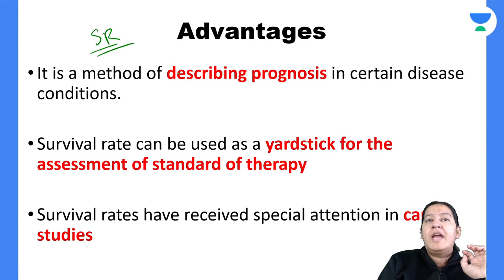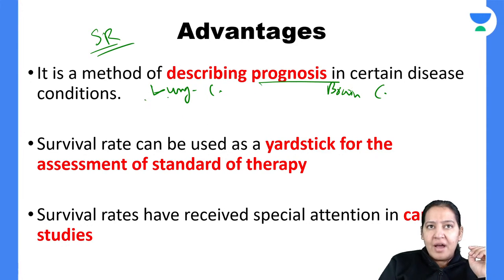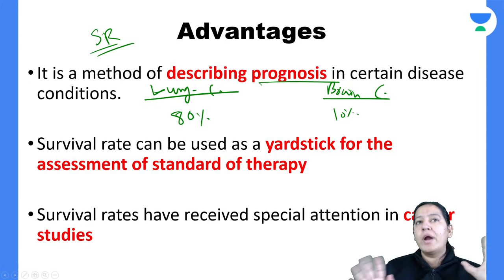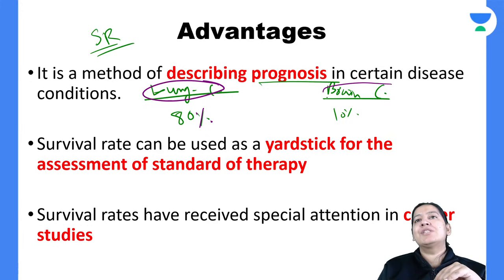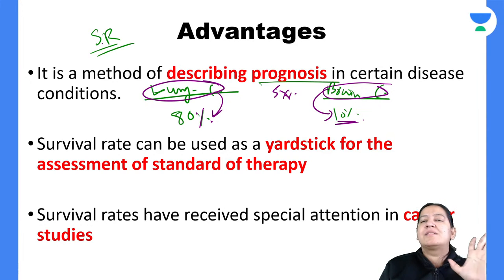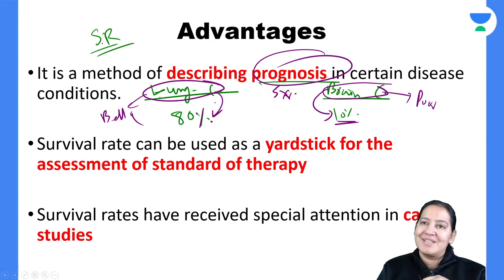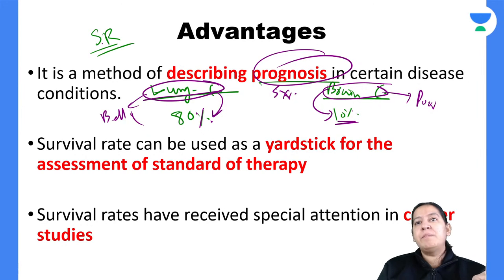Survival rate is a method describing the prognosis of a disease. Example: for lung cancer survival rate is 80%, for brain cancer it is 10%. This means out of 100 lung cancer patients, 80 are alive after five years — good prognosis. For brain cancer, only 10 are alive — poor prognosis. Note: these figures are illustrative, not real.